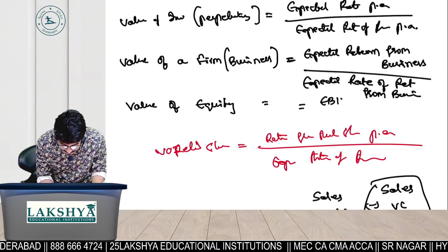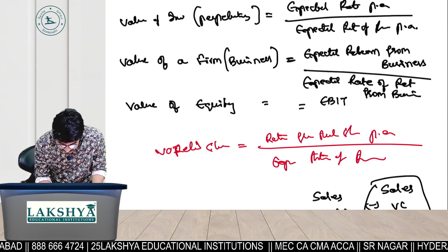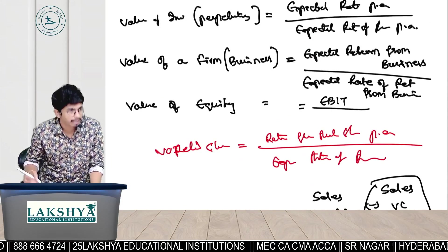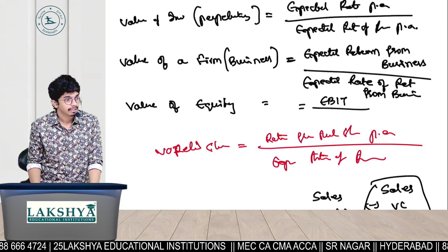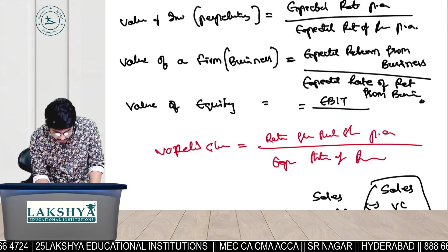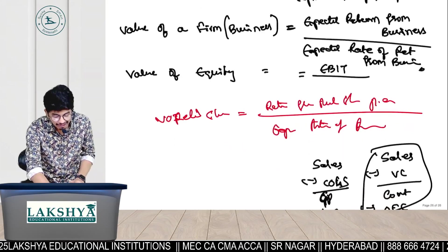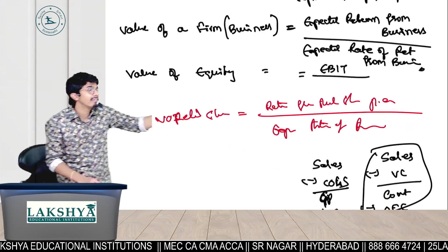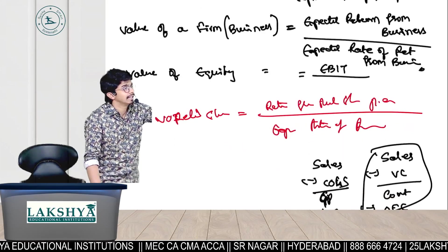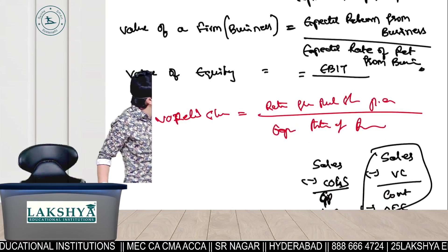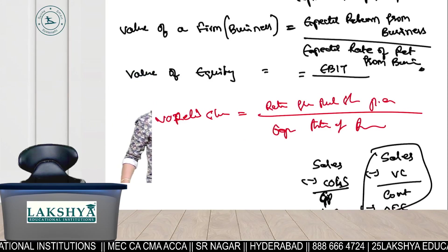So that's why, return from the main business means operating income, which means EBIT. Therefore the formula is EBIT divided by the expected rate of return from the business. Be careful when writing the denominator.